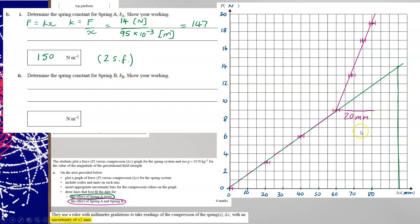Spring B, well, I see that the system between 60 millimetres and 80 millimetres has compressed by 20 millimetres extra.